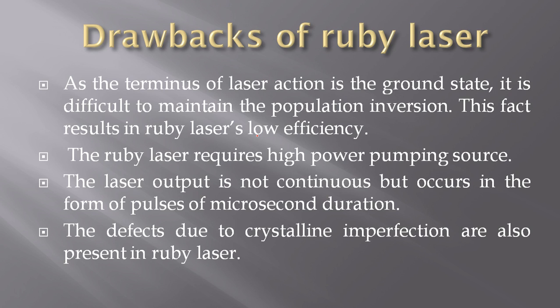First of all, the drawbacks of Ruby laser. As the terminus of laser action is a ground state — which I discussed in my last video lecture on the spiking of Ruby laser — it is difficult to maintain the population inversion. This fact results in Ruby laser's low efficiency.